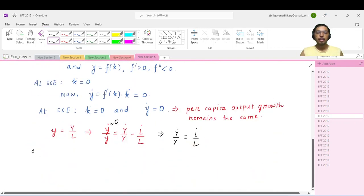So initially, when L dot by L equals n1, then what is the growth of the aggregate output? It is n1. And finally, when L dot by L becomes n2, what is the growth of the aggregate output?